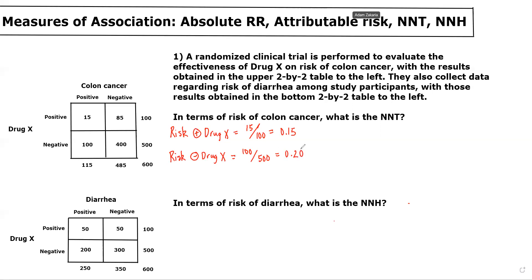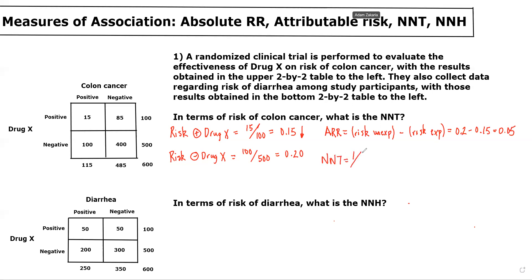Because the risk of colon cancer was lower among people who received the drug, we know we're dealing with a beneficial exposure or treatment, and therefore we use the absolute risk reduction. Absolute risk reduction equals risk among the unexposed minus risk among the exposed, which is 0.2 minus 0.15, equal to 0.05. We then calculate the number needed to treat as 1 divided by the absolute risk reduction, which is 1 over 0.05, equal to 20.